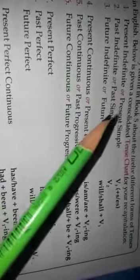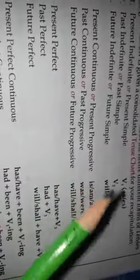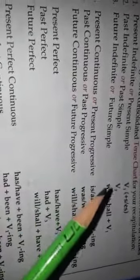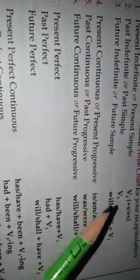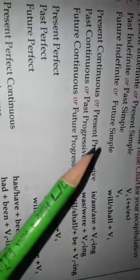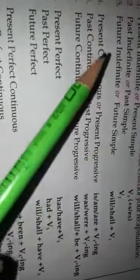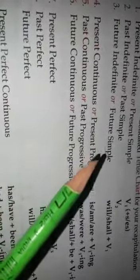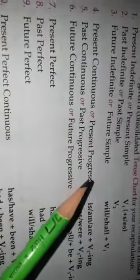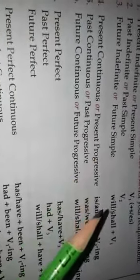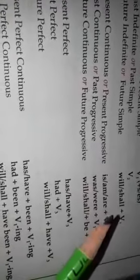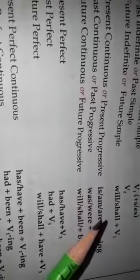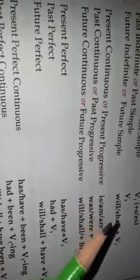Now look, the second is past simple — verb 2. If there is any sentence with verb 2, you can recognize that this is simple past tense. Like that, future simple tense — when you see 'will' or 'shall' plus verb 1 in a sentence, you can recognize it is future simple tense.